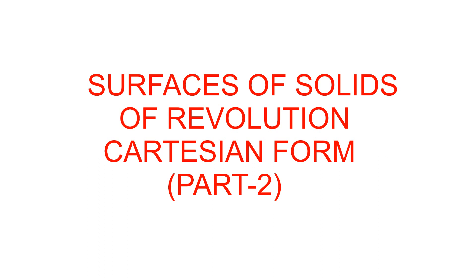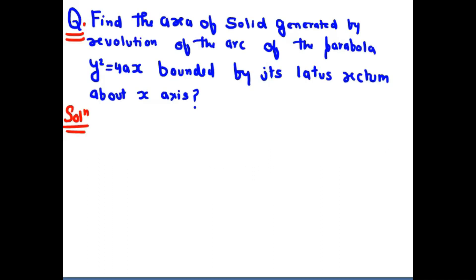Question number one: find the area of the solid generated by revolution of the arc of the parabola y² = 4x. This is important — y² = 4x bounded by its latus rectum about the x-axis.